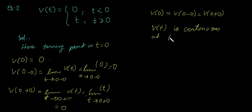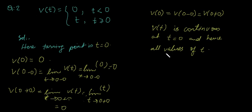The function v(t) is continuous at t equals 0, and hence for all values of t. Since at the dangerous point or turning point t equals 0 the function is continuous, this means the function is continuous at all points of t — it is a continuous function for all real numbers t.